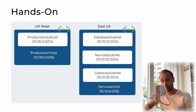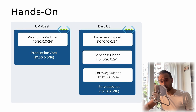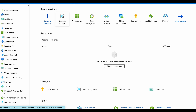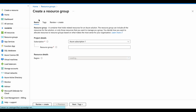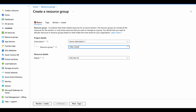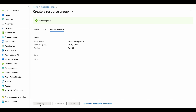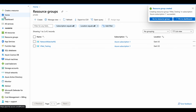Now, after running through the slides, it's time for a real-life demonstration. We are going to create two different VNets: a production VNet and a services VNet. The production VNet will have just one subnet — the production subnet — while the services VNet will have three different subnets: database, services, and gateway. Right now I'm going to show how to create VNets, how to create subnets, and how to assign a proper number of IP addresses. The first thing we do is create a resource group — we select resource groups and click create, providing the name 'VNet-testing', then review and create.